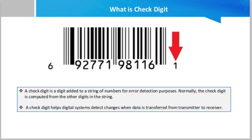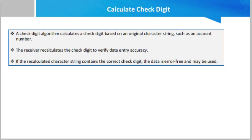A check digit is a digit added to a string of numbers for error detection purposes. Normally, the check digit is computed from the other digits in the string. A check digit helps digital systems detect changes when data is transferred from transmitter to receiver. The check digit is the decimal equivalent of the binary checksum used in the binary system.